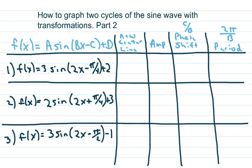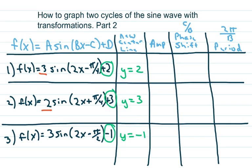So we're going to first write down our new center lines, which are these pieces here. This is y equals 2, y equals 3, and y equals negative 1. Our amplitude is this part right here — that's the radius, it's how big your circle is. The bigger the amplitude, the bigger the stretch. So this would be 3, 2, back to 3.